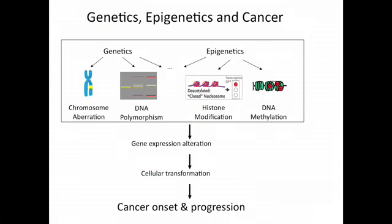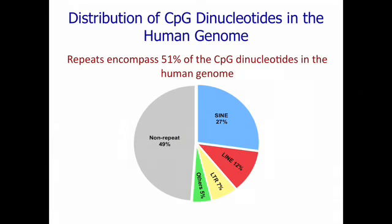When you think about cancer, you have to think about both genetic alterations and epigenetic alterations — both factors contributing to the process that ultimately affects expression of key genes and entire networks of proteins. The majority of CpG dinucleotides in the genome actually reside within repeats, not within non-repetitive DNA.